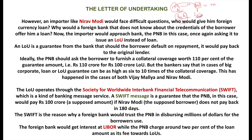A Letter of Undertaking is a guarantee from Punjab National Bank to the Paris Bank — it says: 'We know Nirav Modi, and if something goes wrong, we will pay you back.' But PNB will not issue a LOU without collateral. In case Nirav Modi runs away, they can auction the collateral and recover the money. However, in this case, very interestingly, PNB did not take any collateral from Nirav Modi in exchange for issuing the LOU.